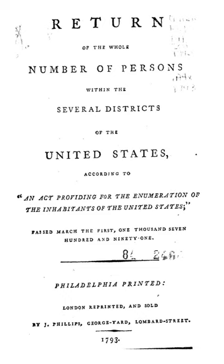Race and ethnicity in the United States Census, defined by the Federal Office of Management and Budget and the United States Census Bureau, are self-identification data items in which residents choose the race or races with which they most closely identify, and indicate whether or not they are of Hispanic or Latino origin — the only categories for ethnicity. The racial categories represent a social-political construct for the race or races that respondents consider themselves to be and generally reflect a social definition of race recognized in this country.